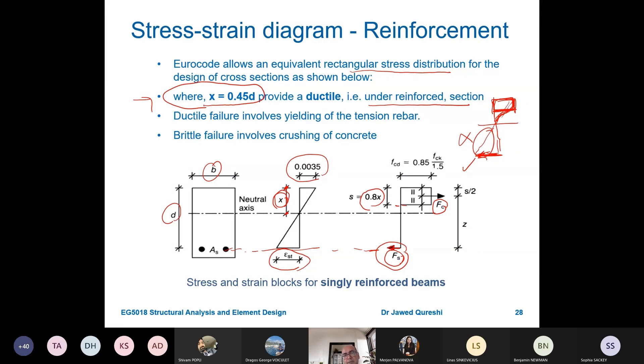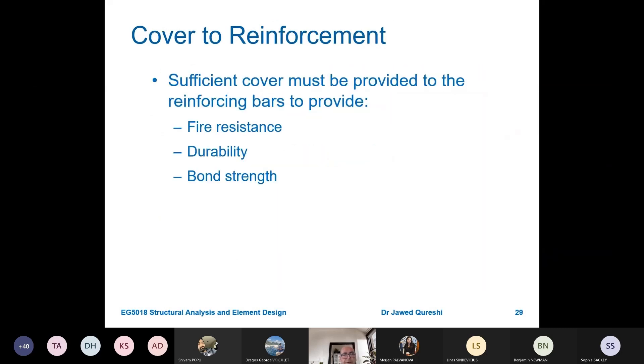We don't want over reinforced section. The reason is that over reinforced section will become brittle and we want to avoid this brittle failure. Keep this thing in mind: fcd is 0.85 times fck divided by this factor which is 1.5. This s distance is the depth of the block, and z is the distance from fc to fs.